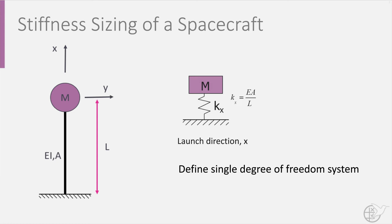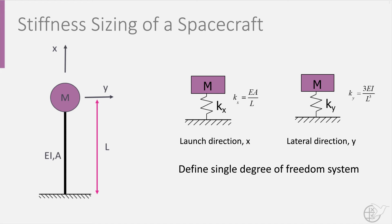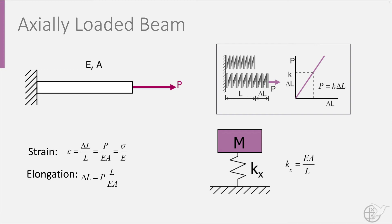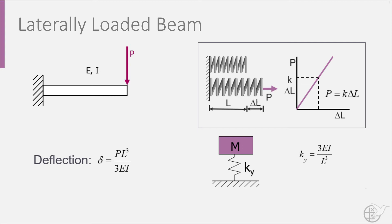If we look at an axially loaded beam, the spring stiffness k is equal to the modulus of elasticity times the cross-sectional area over the length of the beam. Similarly, for a laterally loaded beam, its lateral or bending stiffness is defined as three times the bending stiffness EI over the length of the beam cubed, in which E is the modulus of elasticity and I the principal moment of inertia for bending. This moment of inertia can be seen as the resistance of the geometry, or the cross section, against deformation.